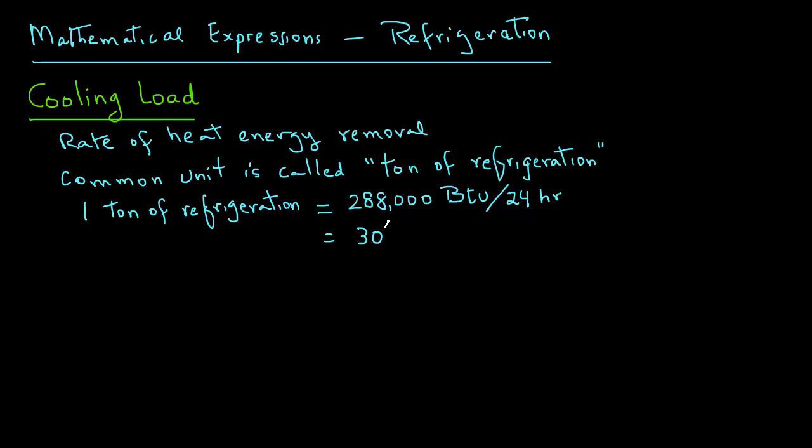In other words, one tonne of refrigeration means a removal of 288,000 BTUs in 24 hours. This is also equivalent to, in SI units, 303,852 kJ per 24 hours.